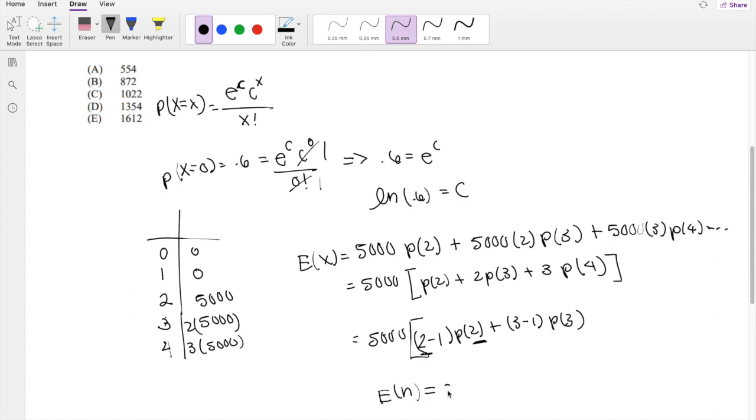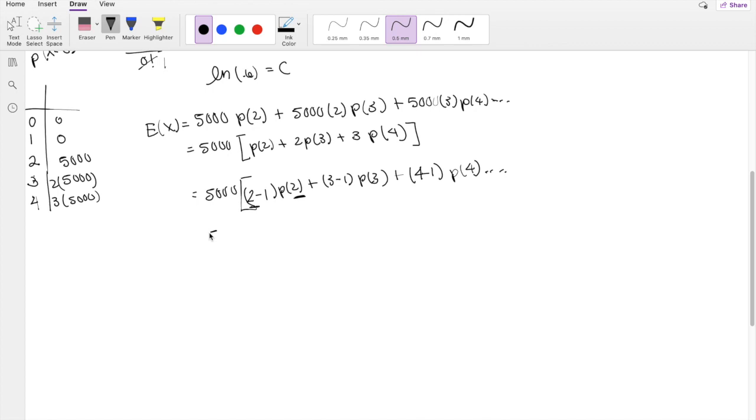Expectation of n is just 2 times the probability of 2 plus 3 times the probability of 3, so on and so on. So that's why I just wanted to get this first number to be the same. So this is 4 minus 1, probability of 4, and so on and so on.